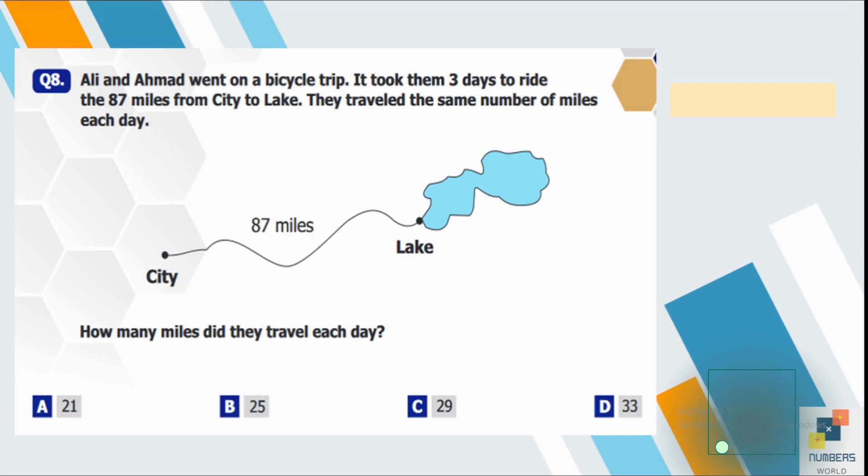Question number eight. Ali and Ahmed went on a bicycle trip. It took them three days to ride the 87 miles from a city to lake. They traveled the same number of miles each day. So how many miles did they travel each day? So the total distance is 87 miles and we have to divide this distance into three equal parts. So we are going to divide it on three. So the answer is 29.